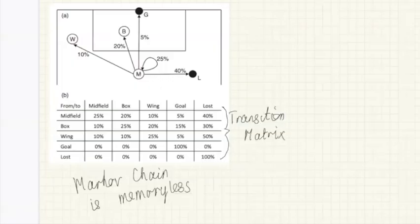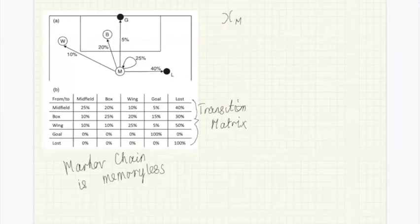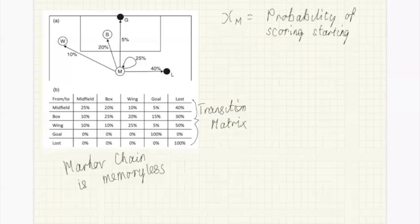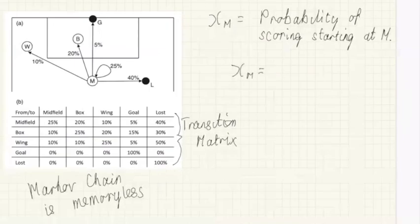We've got these different transition probabilities, and we're interested in expected threat. x_m — our expected threat for the midfield area — equals the probability of scoring a goal starting at m. I'm going to determine this probability step by step, starting with goals. If we're in midfield, the probability of scoring a goal directly is 5%, so we write 0.05.